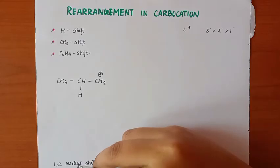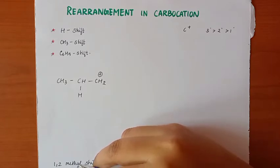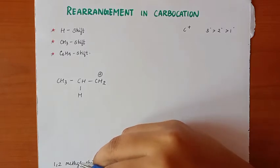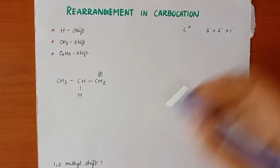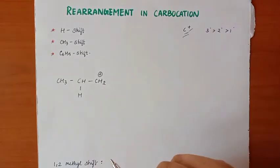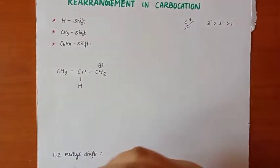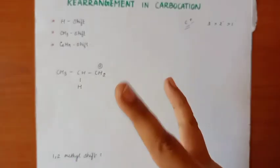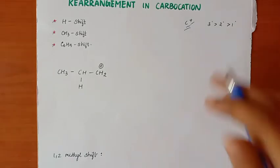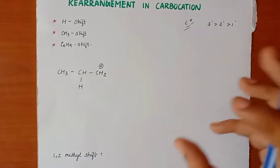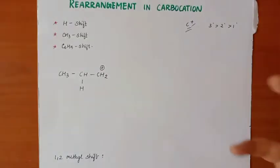In this video, we will talk about carbocation rearrangement. This is an exclusive property of carbocations. Carbocation rearrangement is a phenomenon — when we talk about carbocations, we need to consider how stable they are. We will show this phenomenon, and that's what we call a rearrangement.